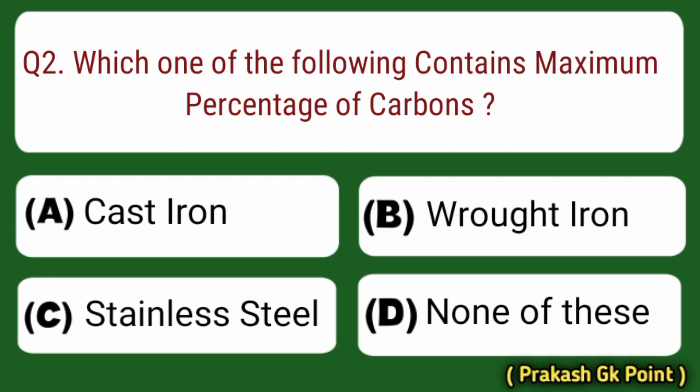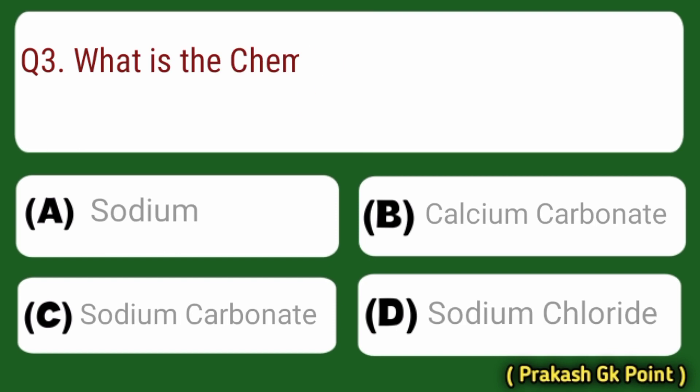Next question: which one of the following contains maximum percentage of carbon? Answer: Option A — Cast Iron.